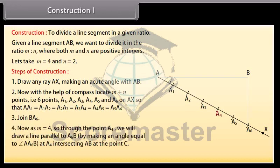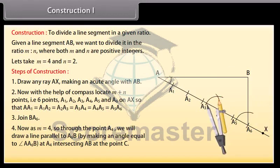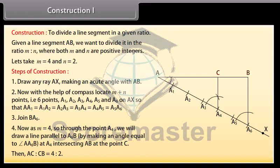Now M equals 4, so through the point A4, we will draw a line parallel to A6B by making an angle equal to angle AA6B at A4, intersecting AB at the point C. Then AC to CB equals 4 is to 2.